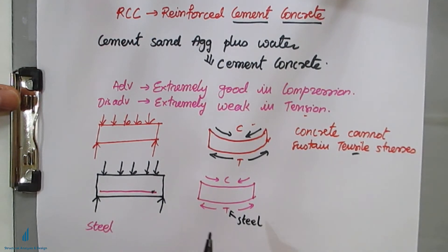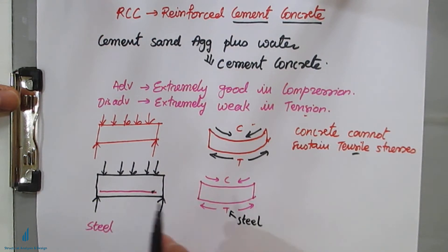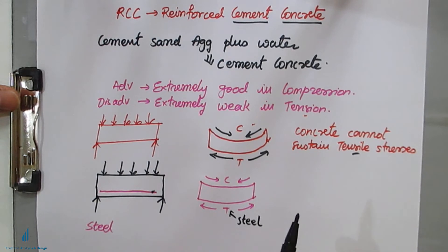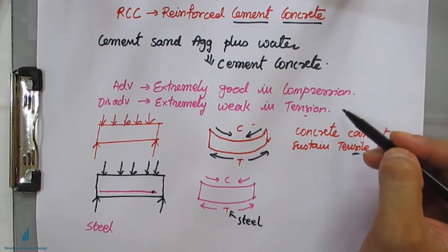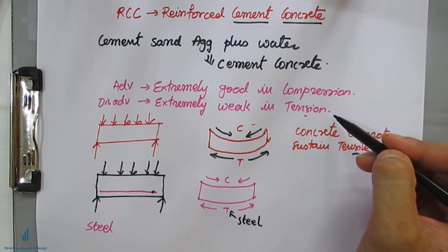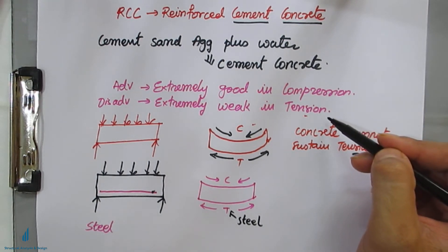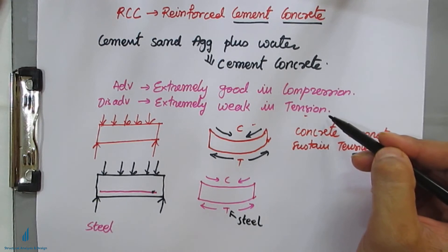So this is the general idea — the general gist — behind RCC. To take care of compression and tension: because the concrete is very good in compression but weak in tension, that's why we provide reinforcing bars in the tension zone to take care of the tensile stresses.